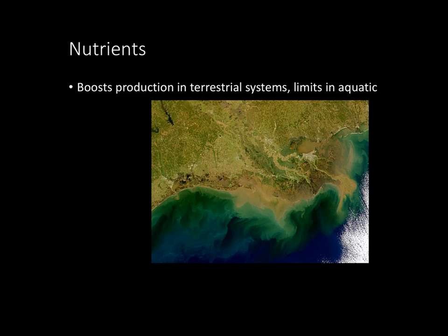Just as we discussed eutrophication, you can see here what is known as a dead zone, which is basically an ecosystem that has undergone eutrophication and an algae bloom. Everything within these highlighted areas is a dead zone where very little to nothing is living because of a lack of oxygen. So although nutrients boost production in terrestrial systems — like adding fertilizer to a garden — in an aquatic system, that creates dead zones and is really pretty dangerous.